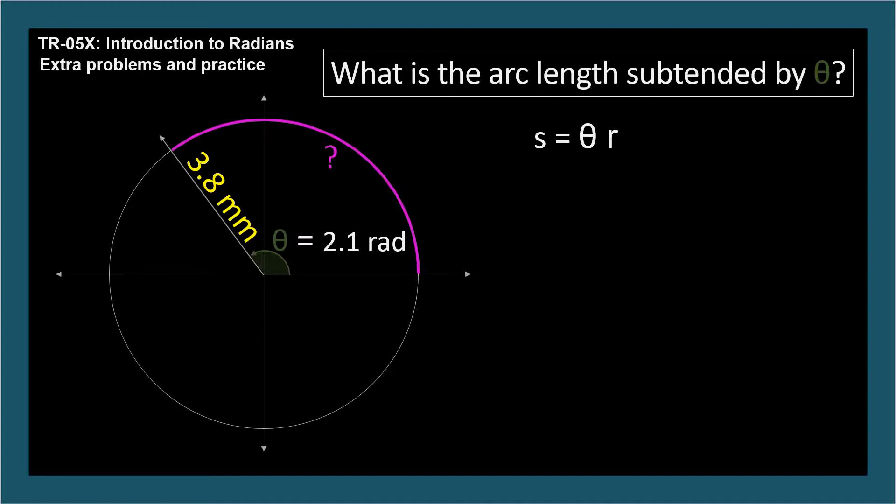Theta is 2.1 radians, and the radius is 3.8 millimeters. So we can plug these values right in. The answer is 8.0 millimeters. Notice that radians times millimeters is millimeters, since radians is a unitless measure.